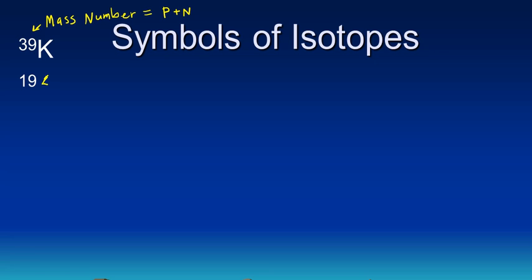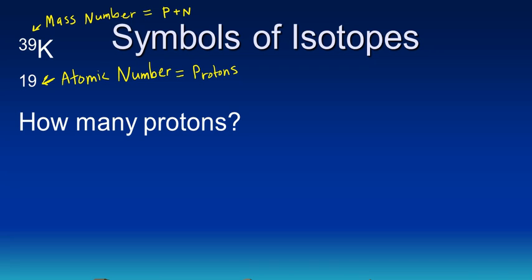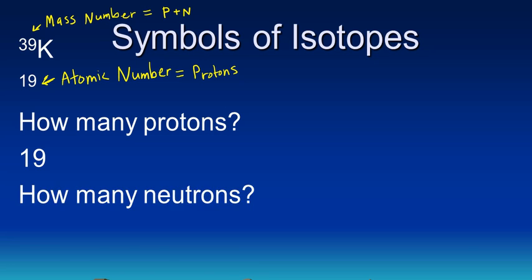This number on the bottom is called the atomic number, and the atomic number tells us the number of protons in that particle. If you want to find the number of neutrons, you have to subtract the top number minus the bottom number. For example, if we were to ask how many protons are in that, it's just equal to the atomic number, or 19. But how many neutrons? We subtract the mass number minus the atomic number, top number minus bottom number. So 39 minus 19 is equal to 20.